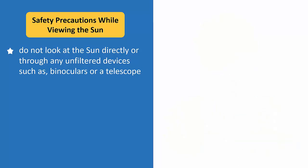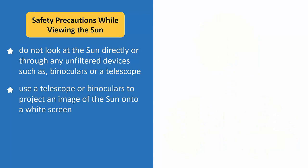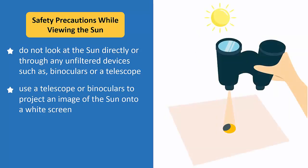To look at the sun, we can use a telescope or binoculars to project an image of the sun onto a white screen like this. If using binoculars, keep the cover on one of the tubes.